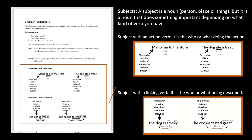Now let's talk about subjects. Subjects are nouns — a person, place, or thing — but the rest of the definition depends on whether you have a linking verb or an action verb. With an action verb, the subject is the who or what doing the action. In 'Mario ran to the store,' we ask who or what is doing the running — that's Mario, so he's the subject. In 'the dog ate the treat,' who or what is doing the eating? The dog.